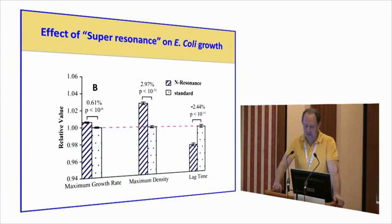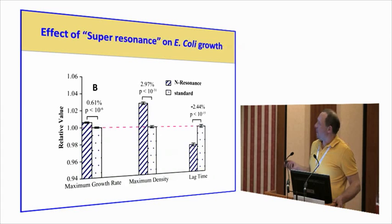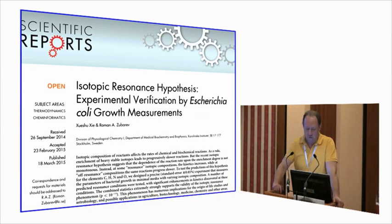And indeed, we saw a big effect, a big increase in growth. So the lag time went down. The maximum density went up. The lag time went down. The maximum growth rate went up. And the maximum density went up. All three parameters corresponding to increase in growth. So bacteria found this particular isotopic composition incredibly advantageous. And of course, we did all the proper controls. It was not easy to publish. But we published this recently in March in Scientific Reports.